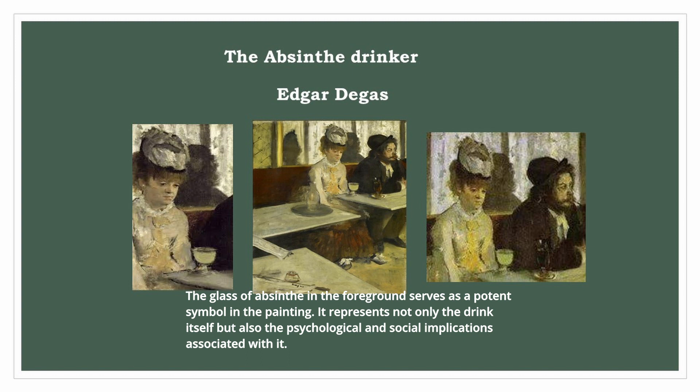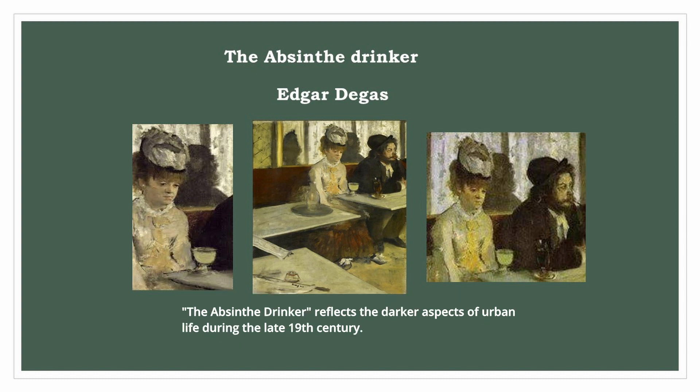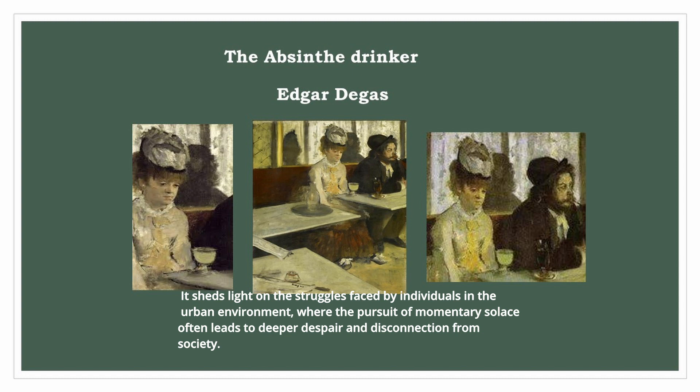The glass of absinthe in the foreground serves as a potent symbol, representing not only the drink itself but also the psychological and social implications associated with it. The Absinthe Drinker reflects the darker aspects of urban life during the late 19th century, serving as a commentary on addiction, isolation, and alienation — shedding light on the struggles faced by individuals where the pursuit of momentary solace often leads to deeper despair and disconnection from society.